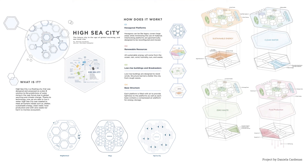The next project is High Sea City — the future city in the age of global warming and sea level rise. It is a floating city designed and proposed as a plan B solution to predictions of water rising in the near future due to global warming and climate change. High Sea City was created to meet all human needs such as shelter, sustainable energy, clean water, food production, and with zero waste and no harm to marine ecosystems. It features hexagonal platforms which, like a puzzle, get together to make villages or even bigger configurations as a city. All sustainable energy will come from the ocean, rain, wind, humidity, and sun. Low-rise buildings are designed to resist winds, and structural barriers shelter the city from rough waves. Each platform is filled with air to provide lightness, and each base contains a compressed air platform for energy storage.